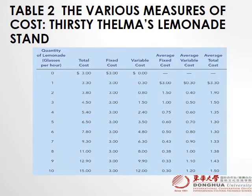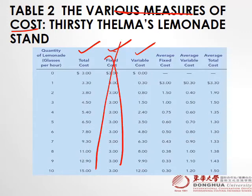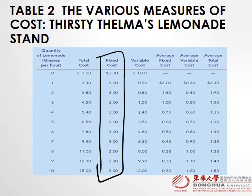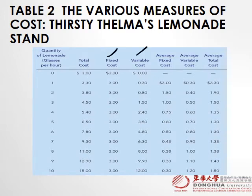We have various measures of cost: total cost, fixed cost, and variable cost. Even if we are not given the fixed cost column, we can still calculate it. At zero production, our cost is 3 — remember the definition of fixed cost: costs that do not vary with the level of production, so even at zero production you still pay. In this case fixed cost is 3.